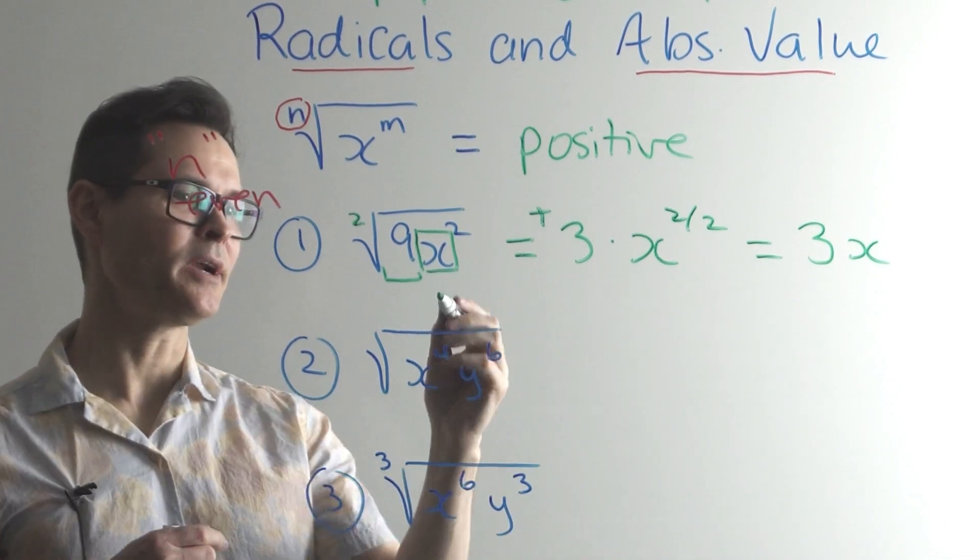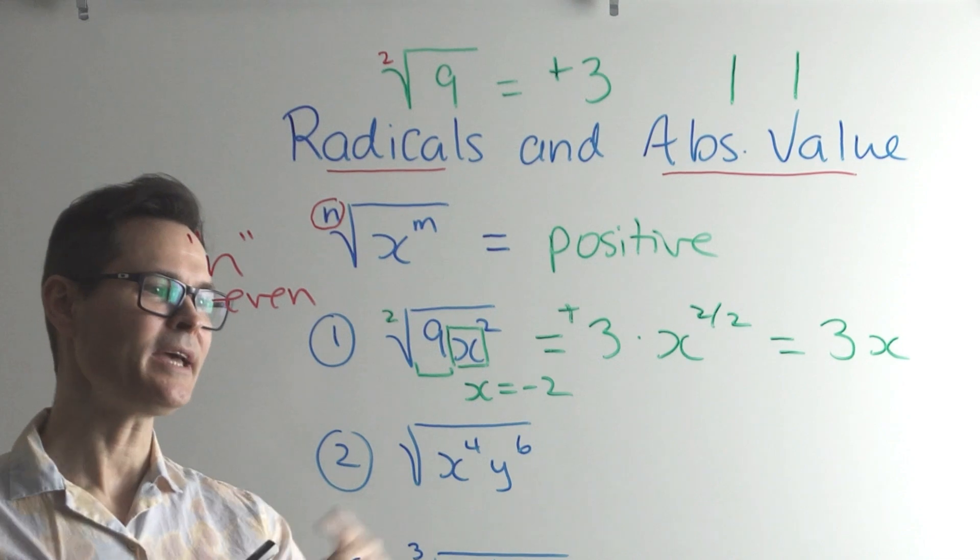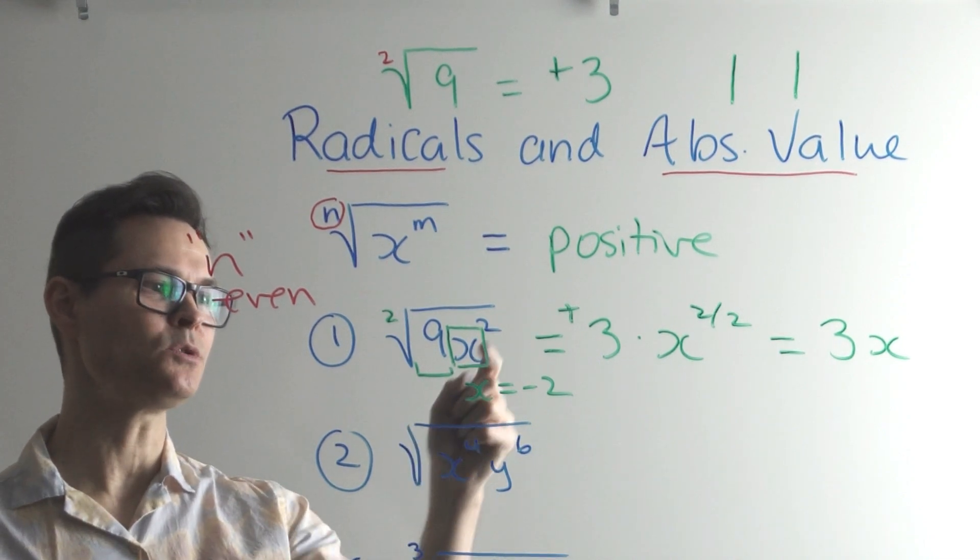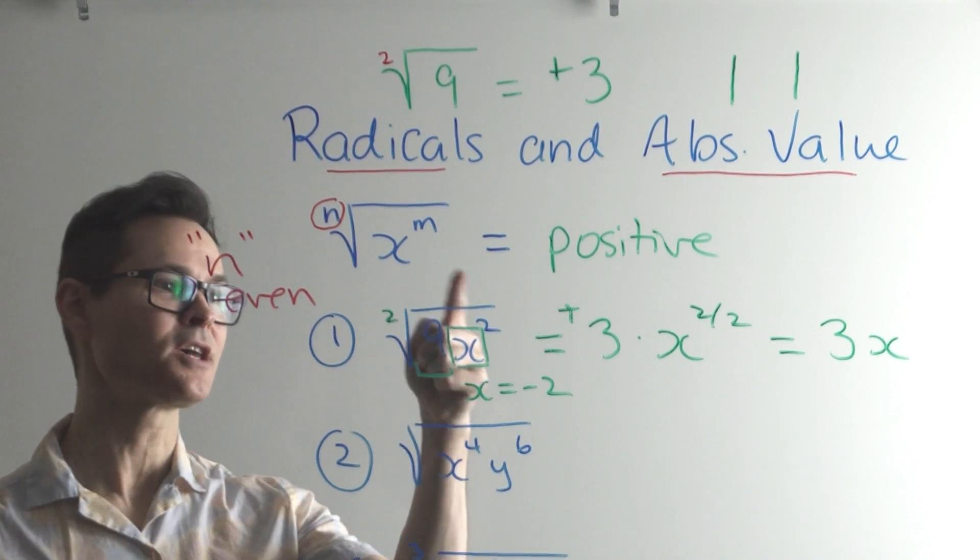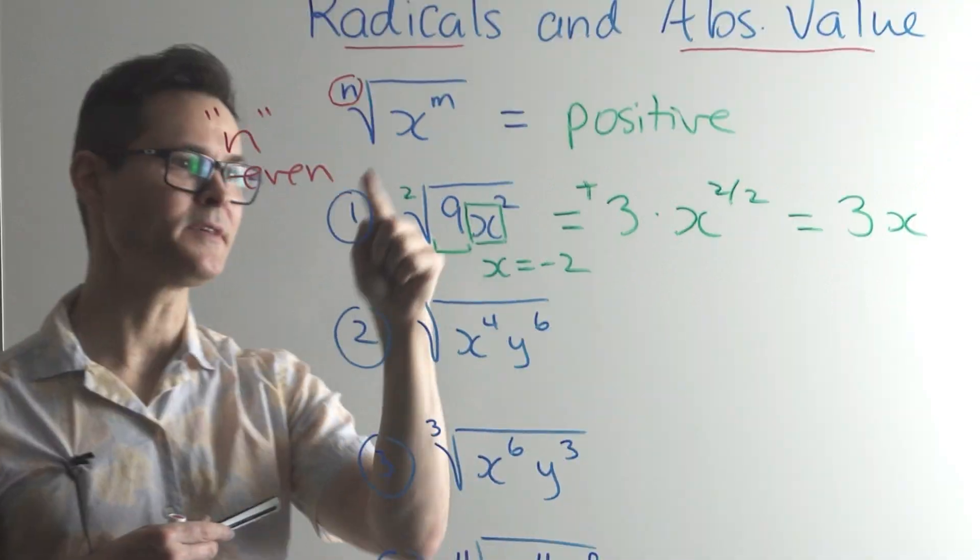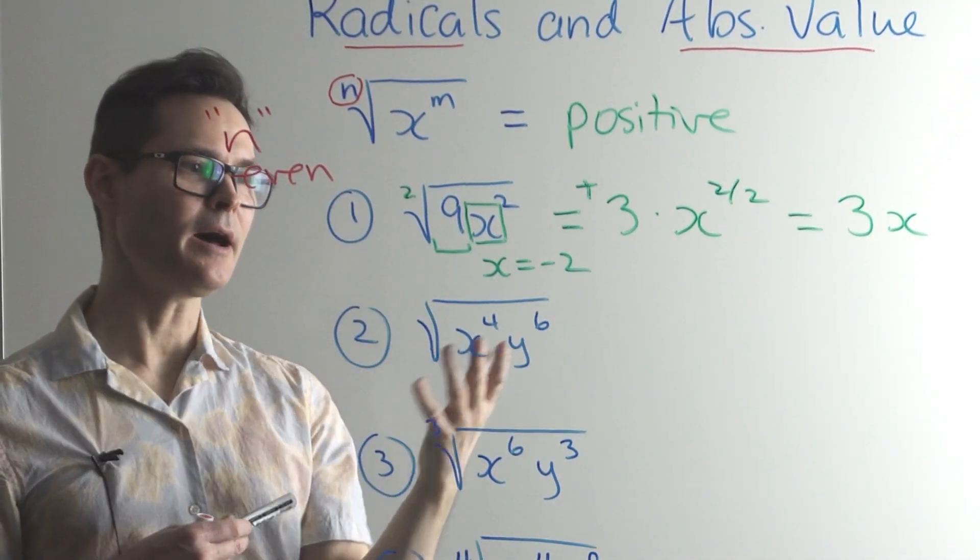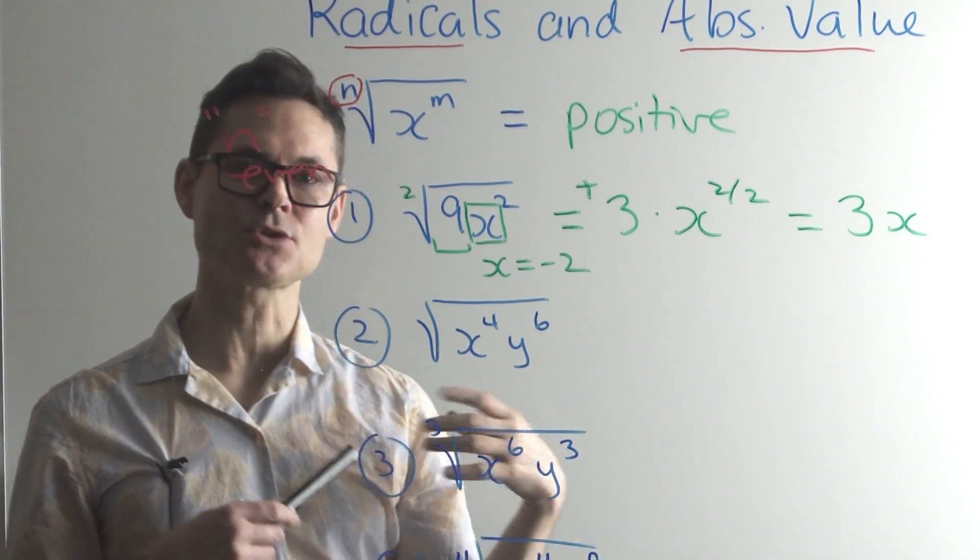Now, so in other words, say x is equal to negative 2. Well, negative 2 is negative 2 squared, which is 4. 4 times 9 is 36. The square root of 36 is 6. So this original question, not simplified, this original blue question, works for negative 2. Now, if I put negative 2 into here, I get an answer of negative 6.